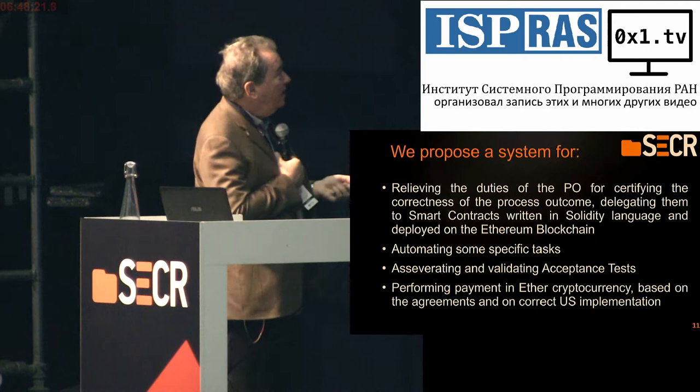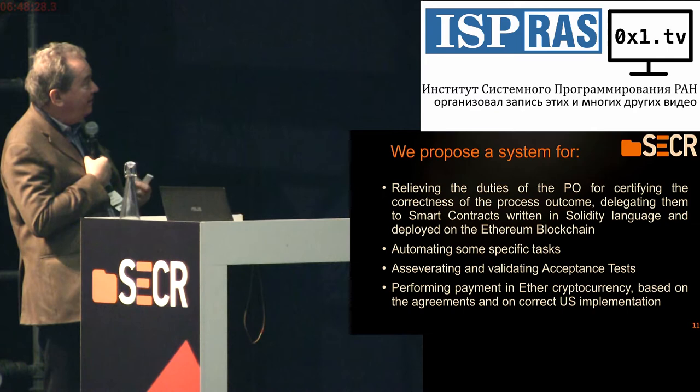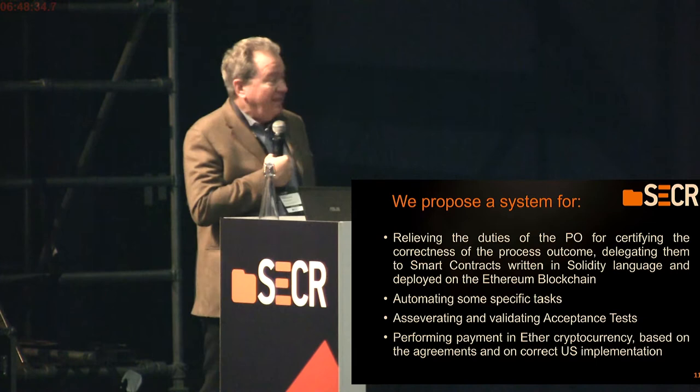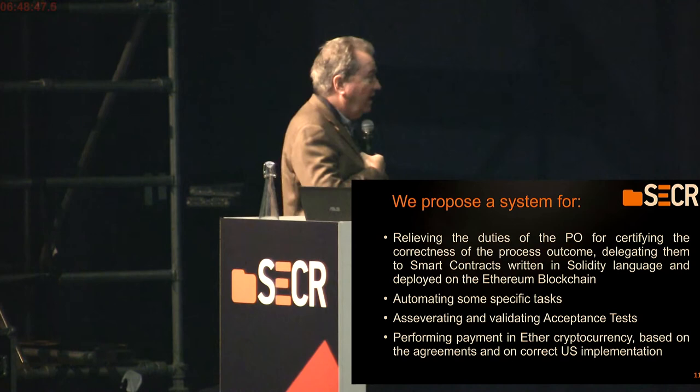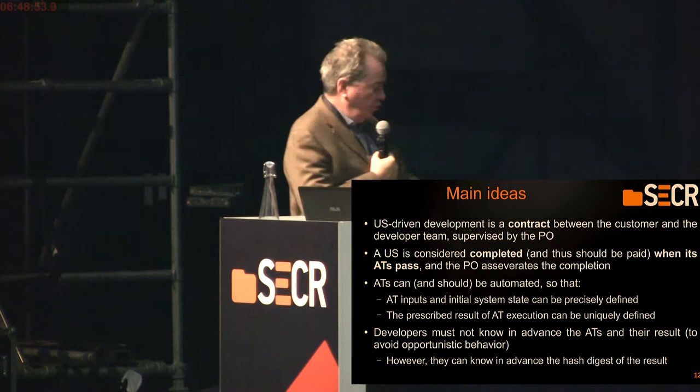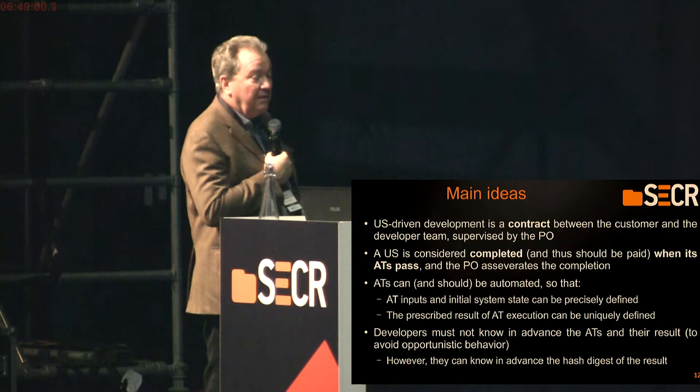What is the aim of our system? To relieve the duties of the product owner for certifying the correctness of the process, delegating the certification to the smart contracts, possibly with a final check of the product owner if needed. So we automate some specific tasks, and can also perform the payments. The main idea is that user-driven development is a contract between the customer and the developer team, supervised by the product owner.